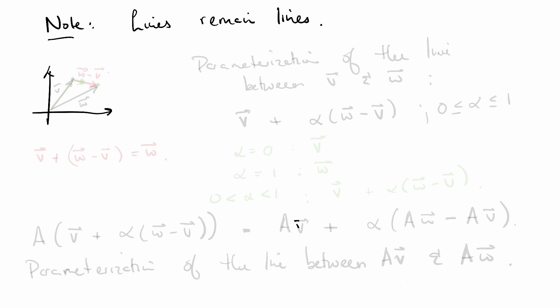Let's say we've got two dimensional space and we've got two vectors. Here's the vector V and here's the vector W. Between them, this vector right here is W minus V just by vector addition. Because V plus W minus V is going to be W. I want to write down a parameterization of the line between the point of V and the point of W. And I claim it looks like this.